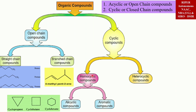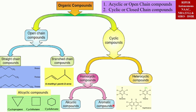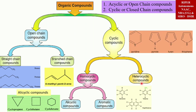Aromatic compounds consist of conjugated planar ring systems accompanied by delocalized pi electron clouds — that is, alternating double bonds and single bonds. They are known as aromatics or arene compounds. Examples: toluene, benzene, naphthalene. Heterocyclic compounds have at least two different elements in the ring. Examples: pyridine, pyrrole, furan, thiophene, etc.